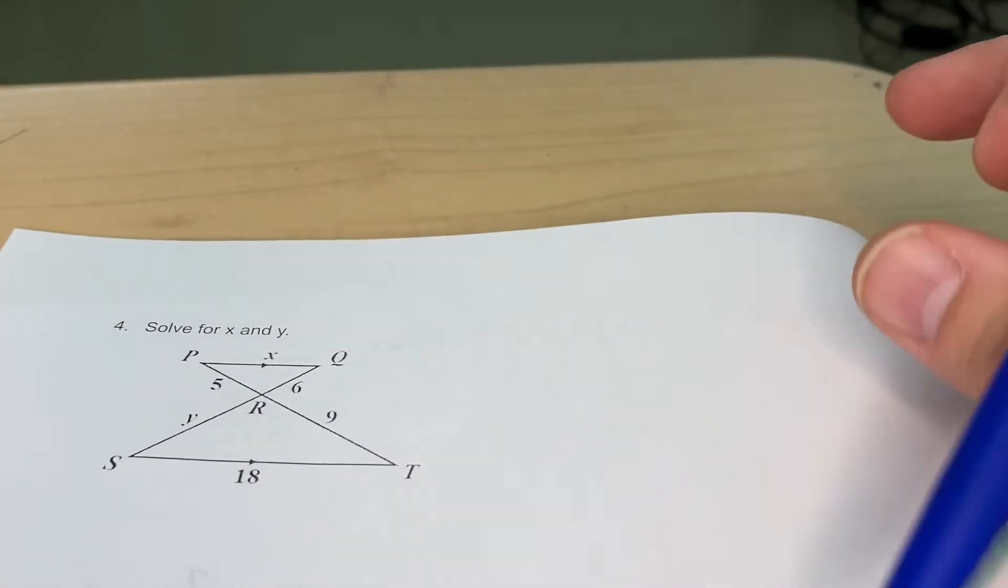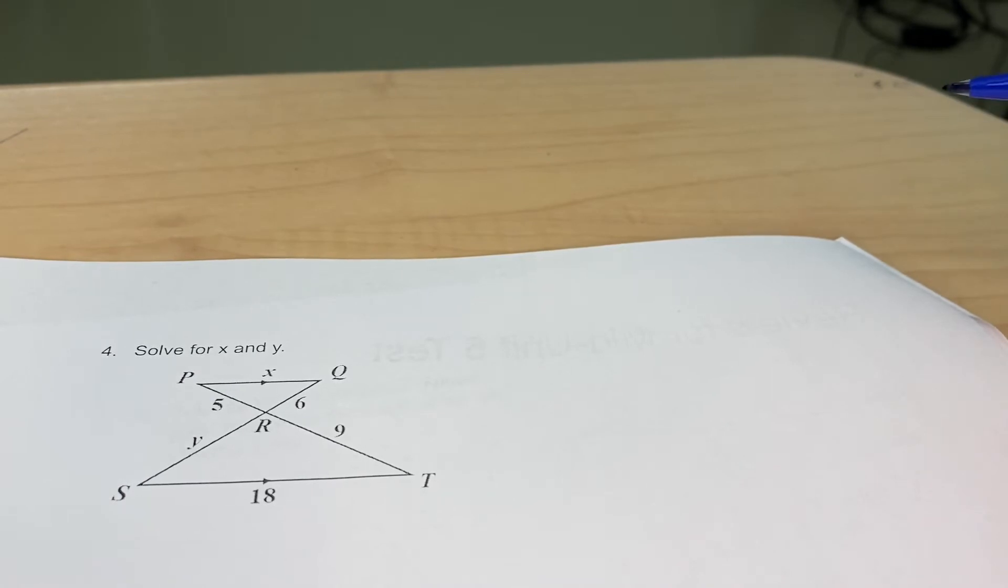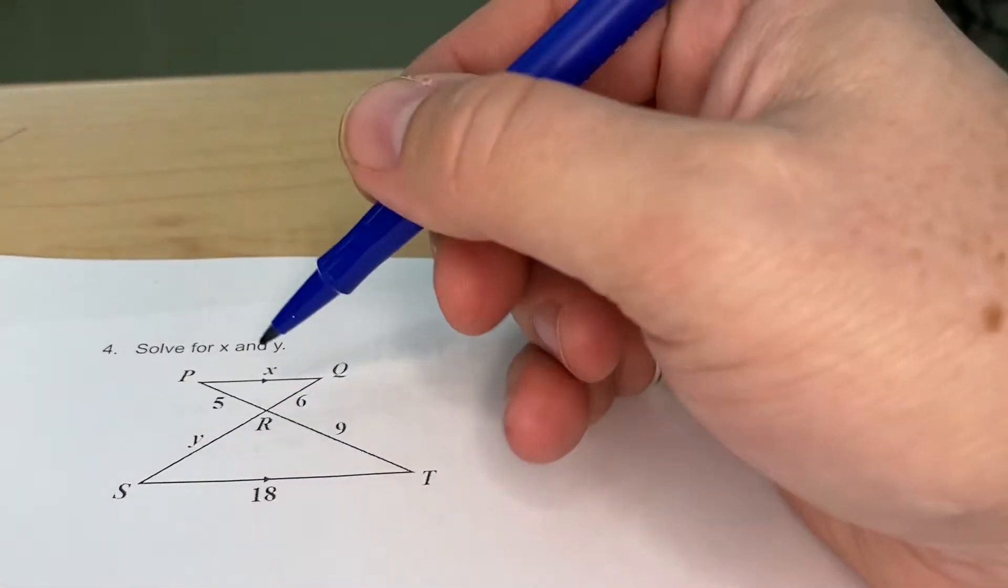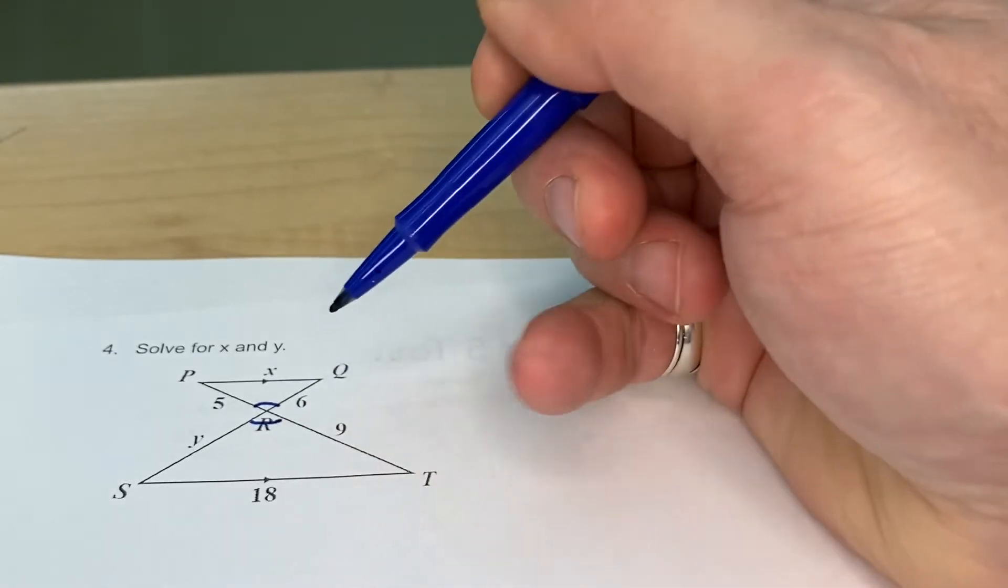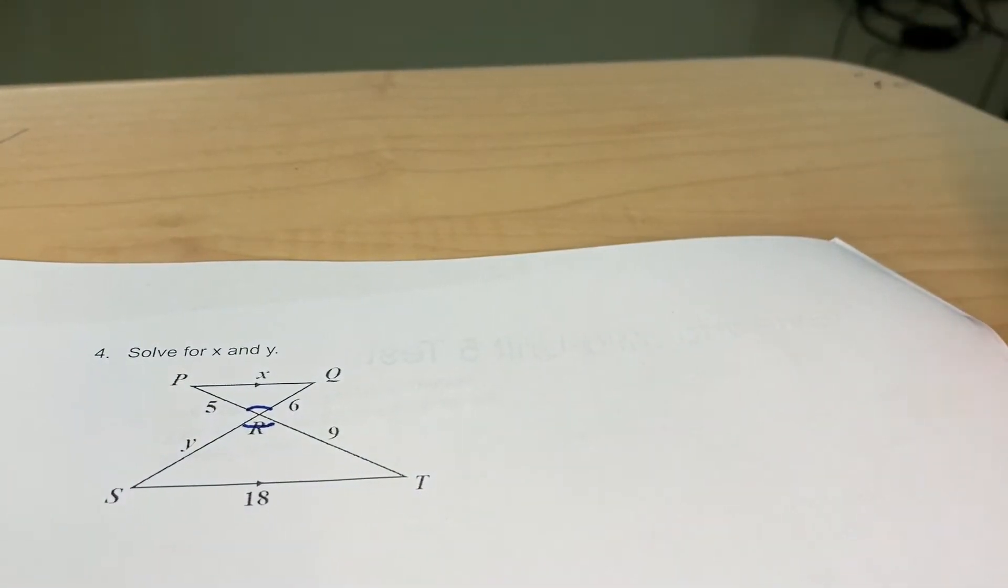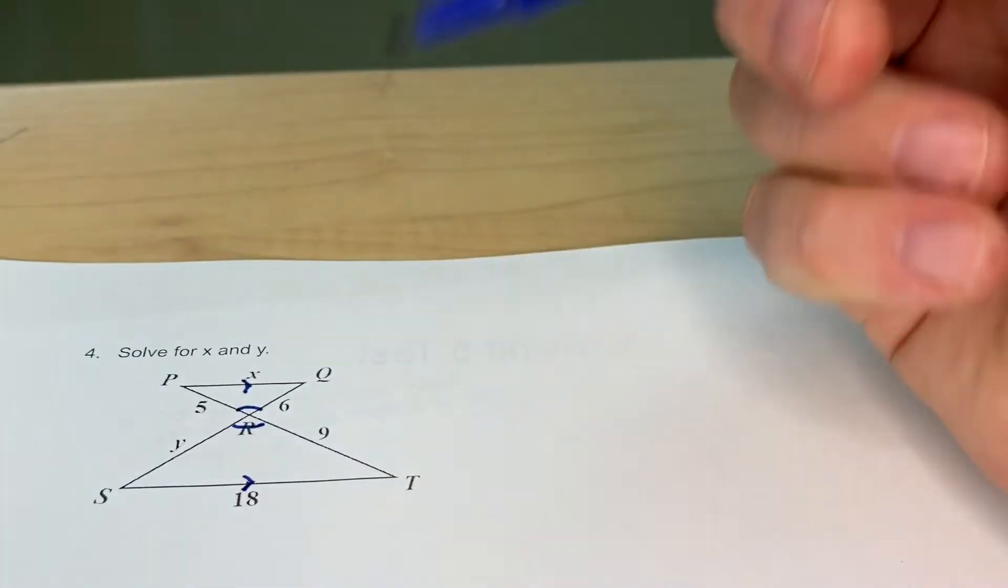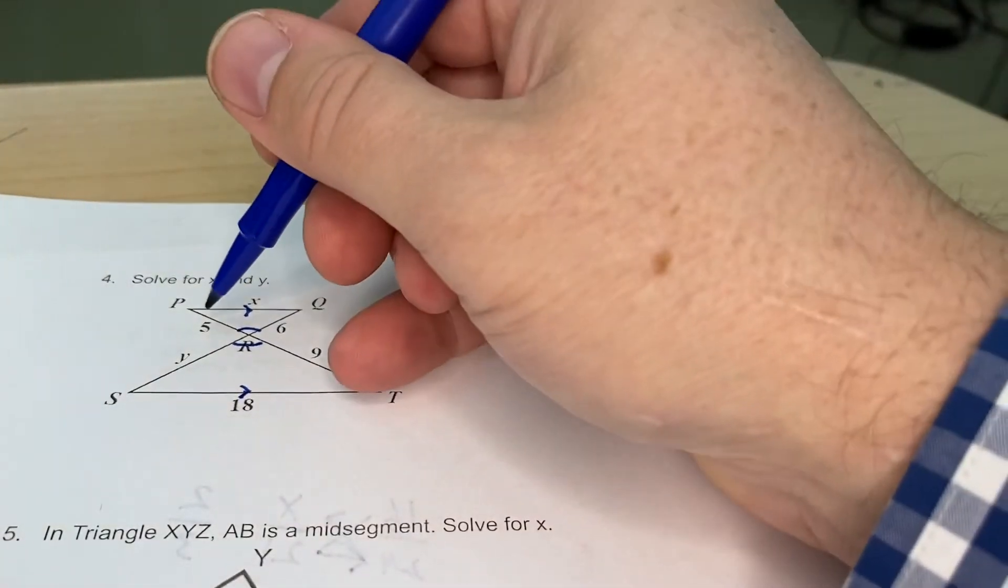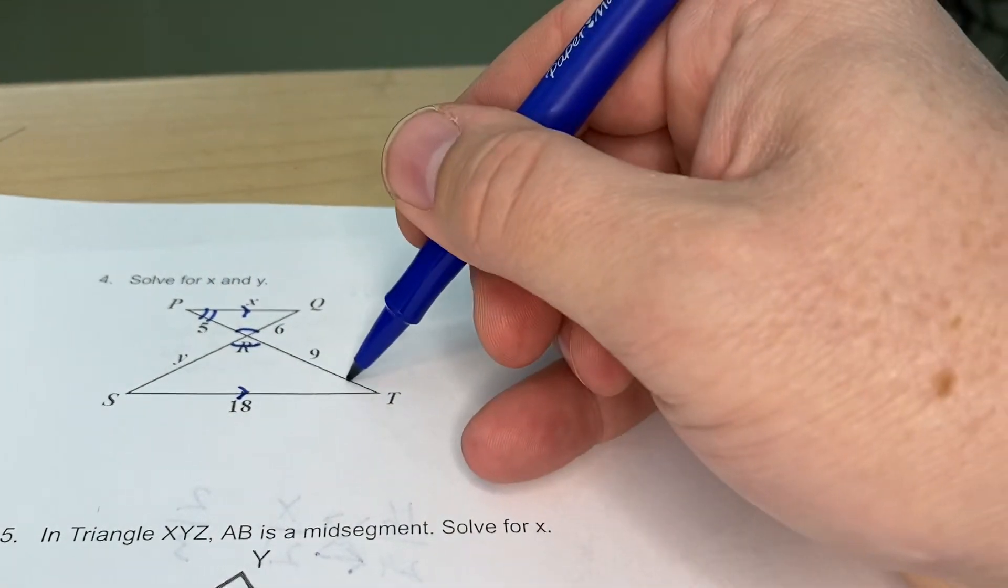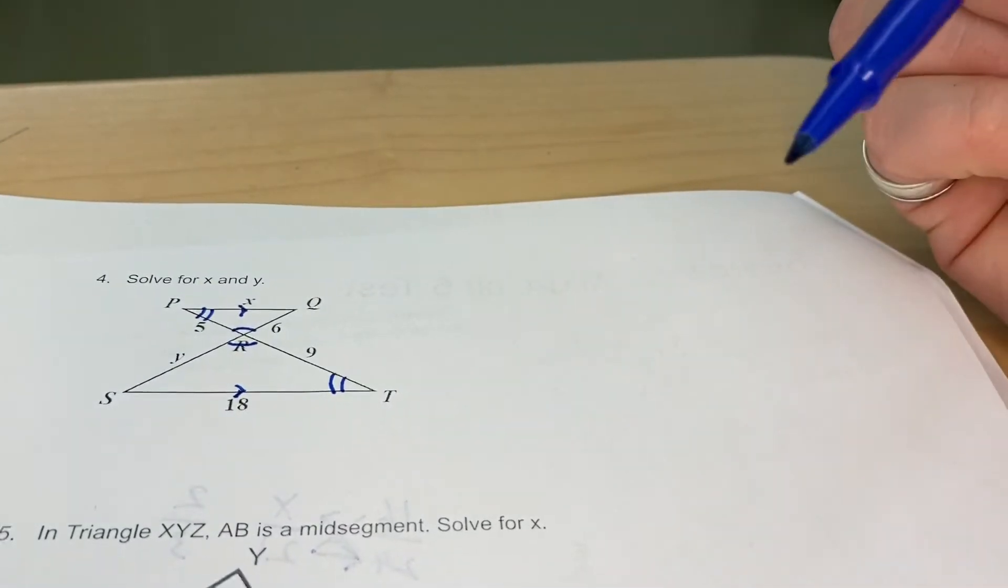Flip it to the next page. Question number four, this one was probably the trickiest one on the whole review. Solve for x and y. So we need to figure out how these triangles are similar. These angles up here centered around R are vertical angles, they are going to be exactly the same. And then we have this little mark and this little mark that indicates that these are parallel lines. So we have to kind of dip back in our knowledge of parallel lines to know that angle P here and angle T down here are alternate interior angles and they are congruent.